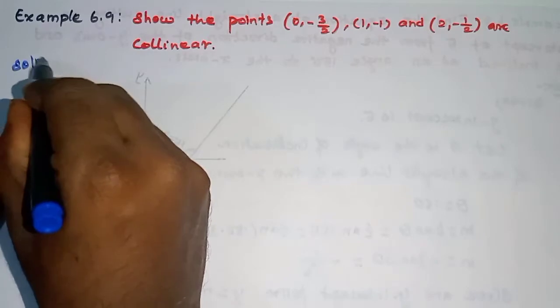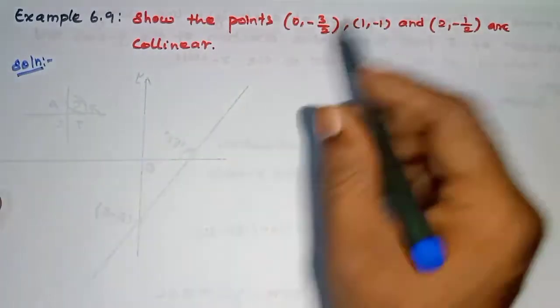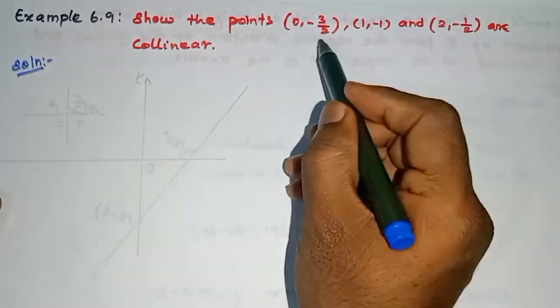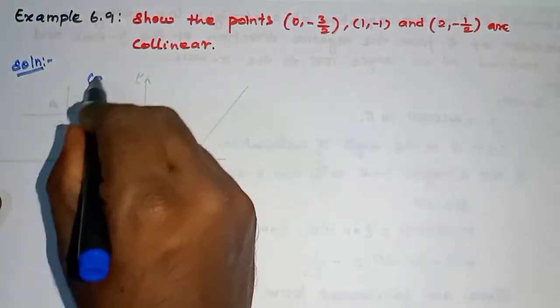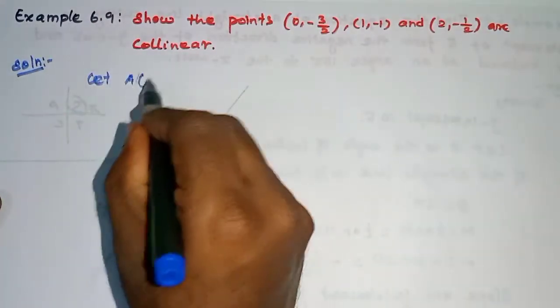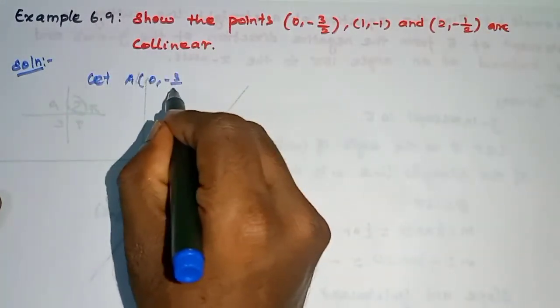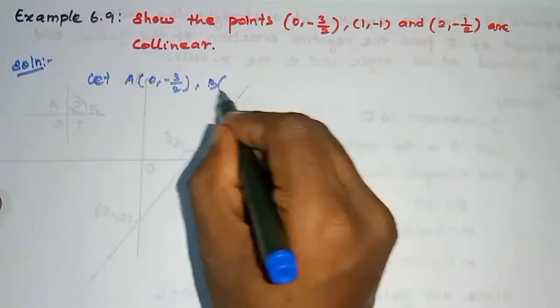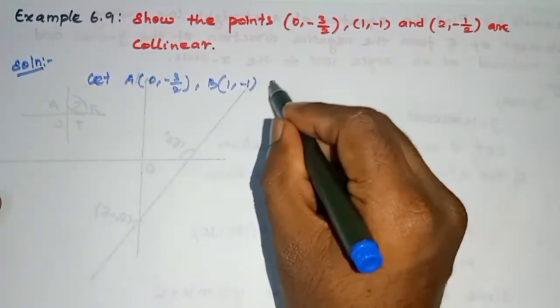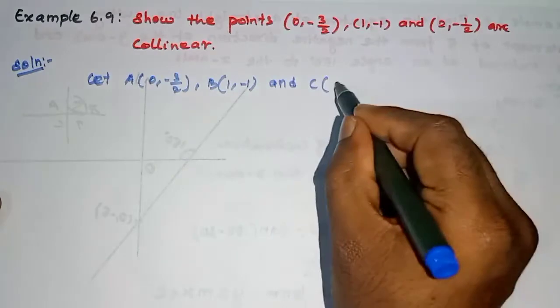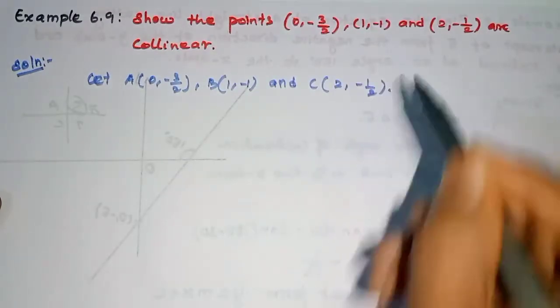See, solution. Collinear points have equal slopes, so let us label: A(0, -3/2), B(1, -1), and C(2, -1/2).